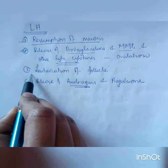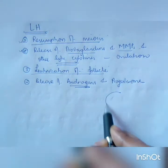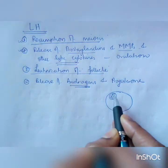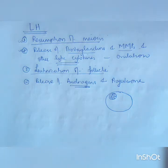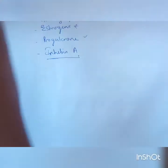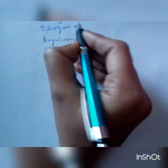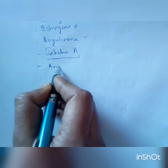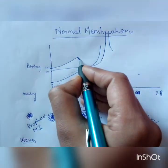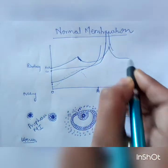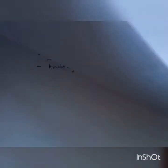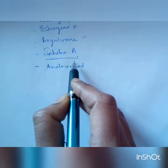LH causes luteinization of the follicle. Luteinization means the follicle becomes large and shaggy, with large cholesterol fatty vacuoles inside the cells, enabling them to produce all types of hormones. The hormones produced are estrogens, progesterone, inhibin A, and androgens. Because baseline activity of FSH is still continuing before it returns to normal, some amount of estrogen is also produced in the luteal phase.